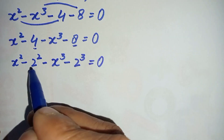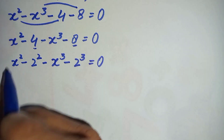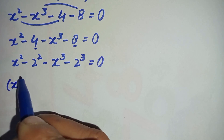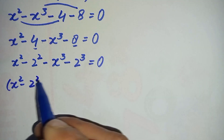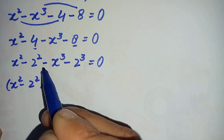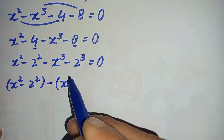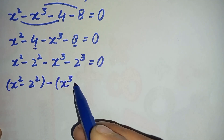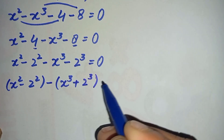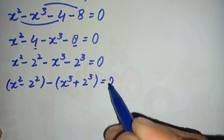Now we combine these two groups of terms. From the first two terms we get x squared minus 2 squared, and from the last two terms we take out a negative sign, giving us minus (x cubed plus 2 cubed) is equal to 0.